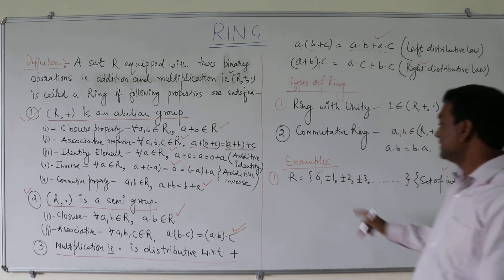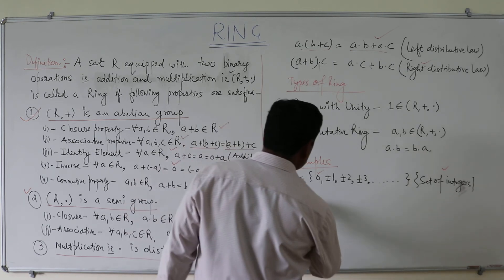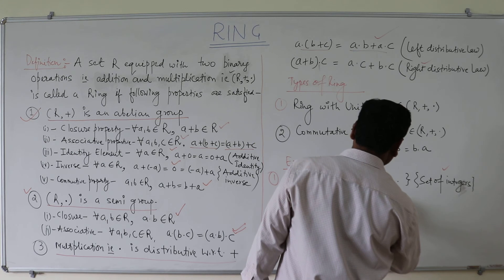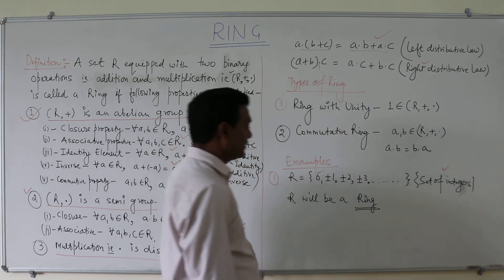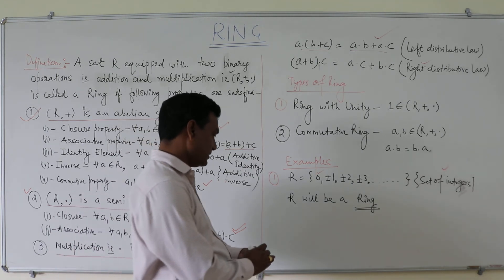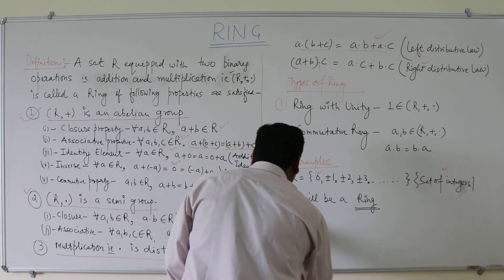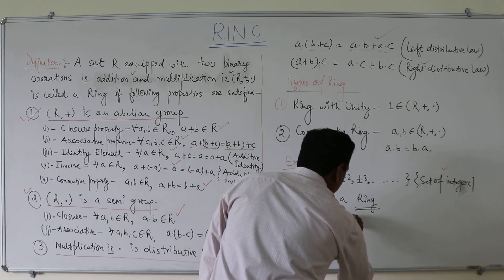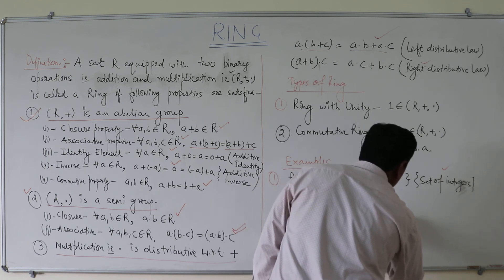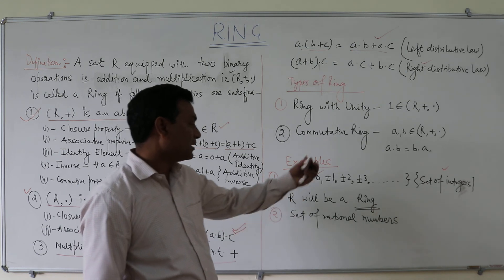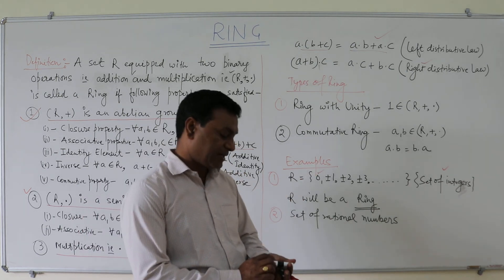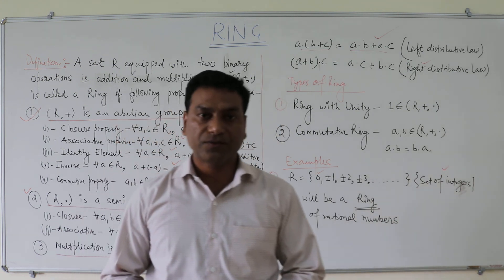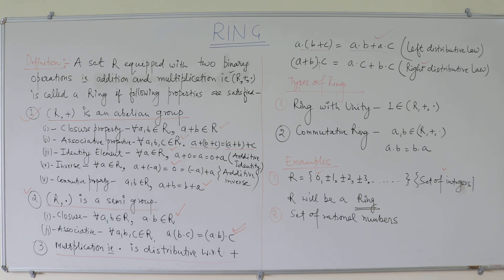So we can say that R — the set of integers — will be a ring. Other sets like the set of rational numbers is also a ring. We can make a set of rational numbers and apply these properties one by one, and it will also come out to be a ring. Thank you.